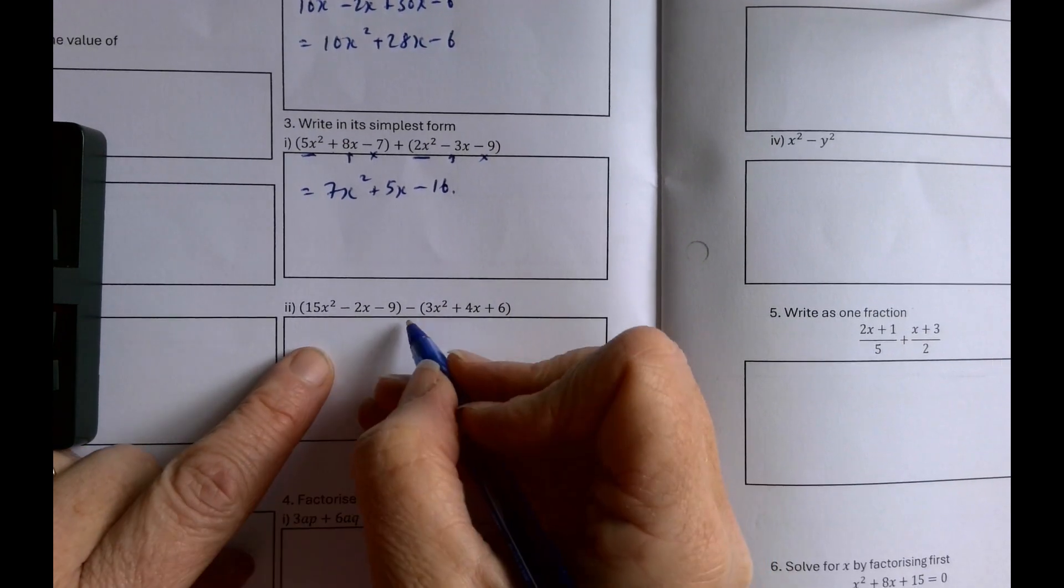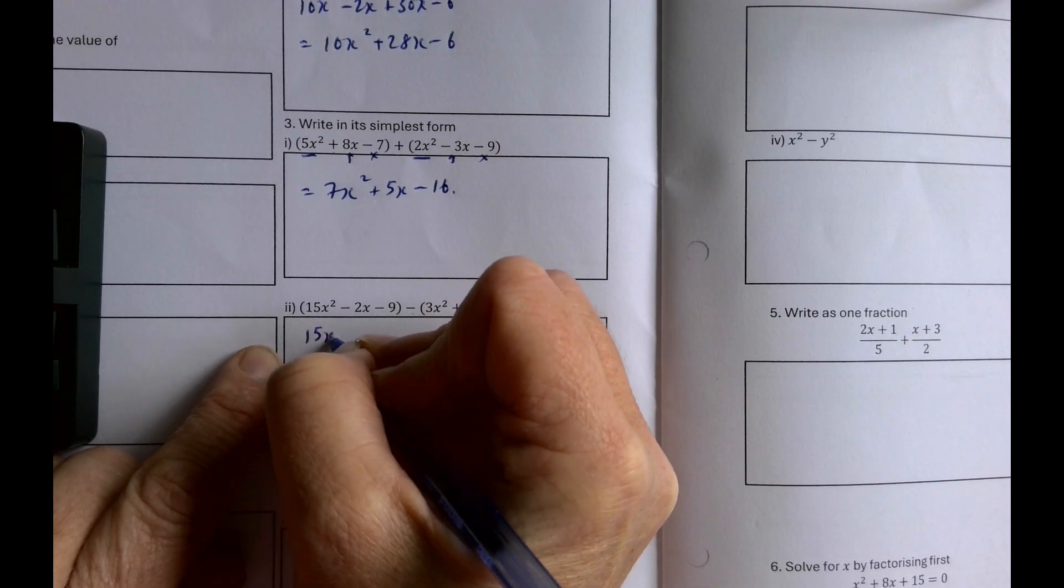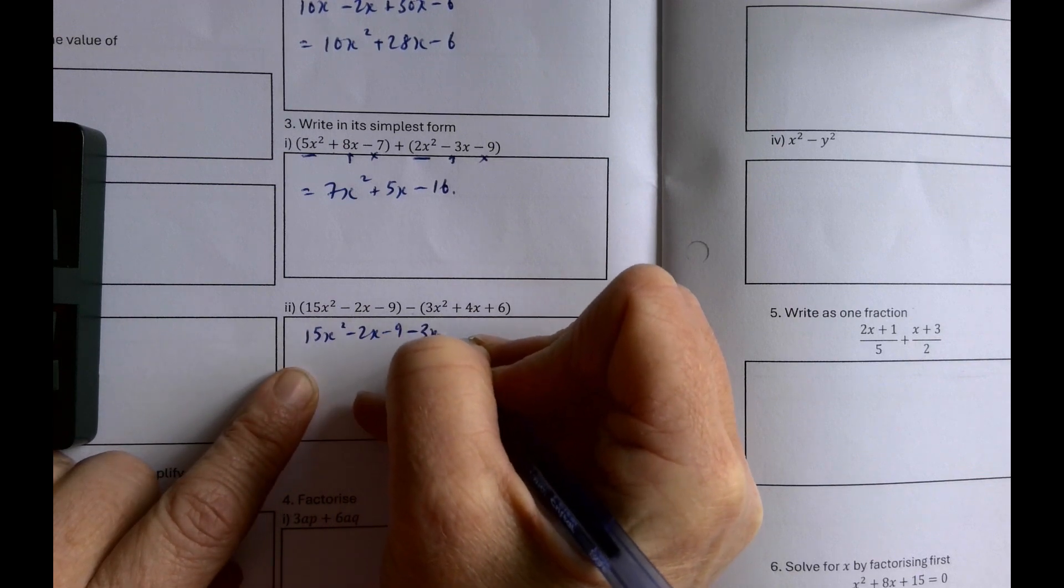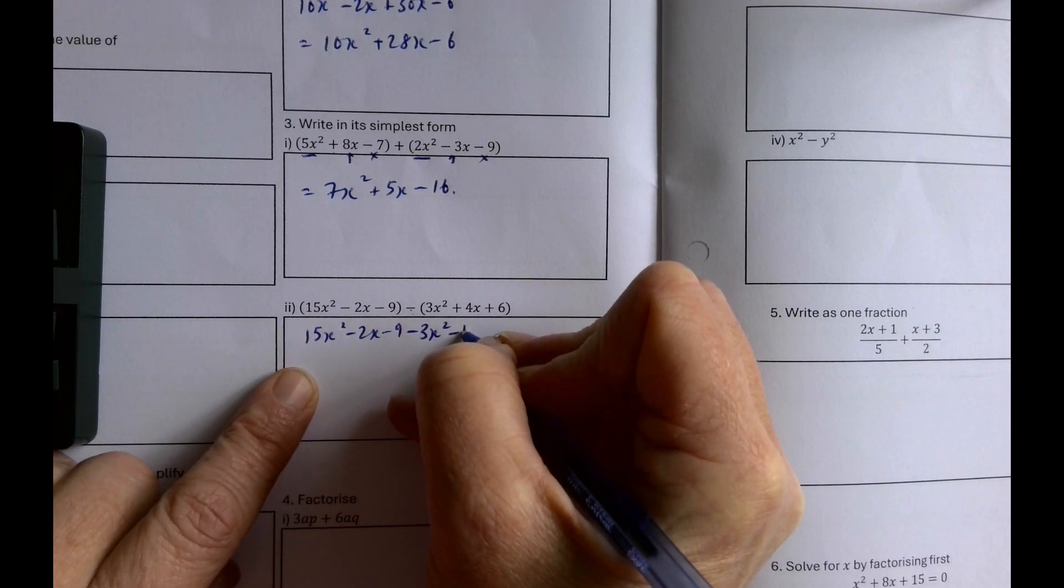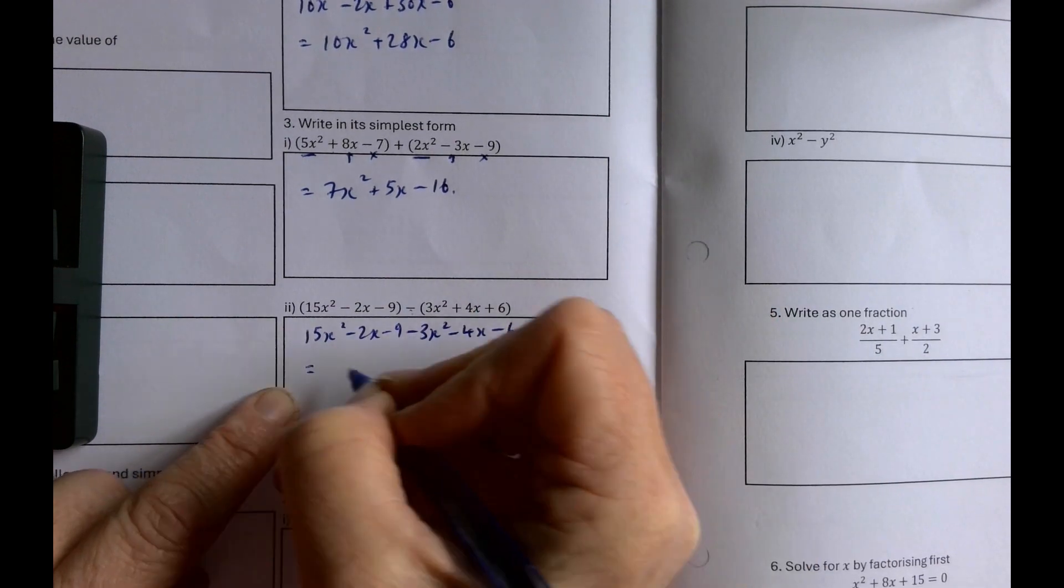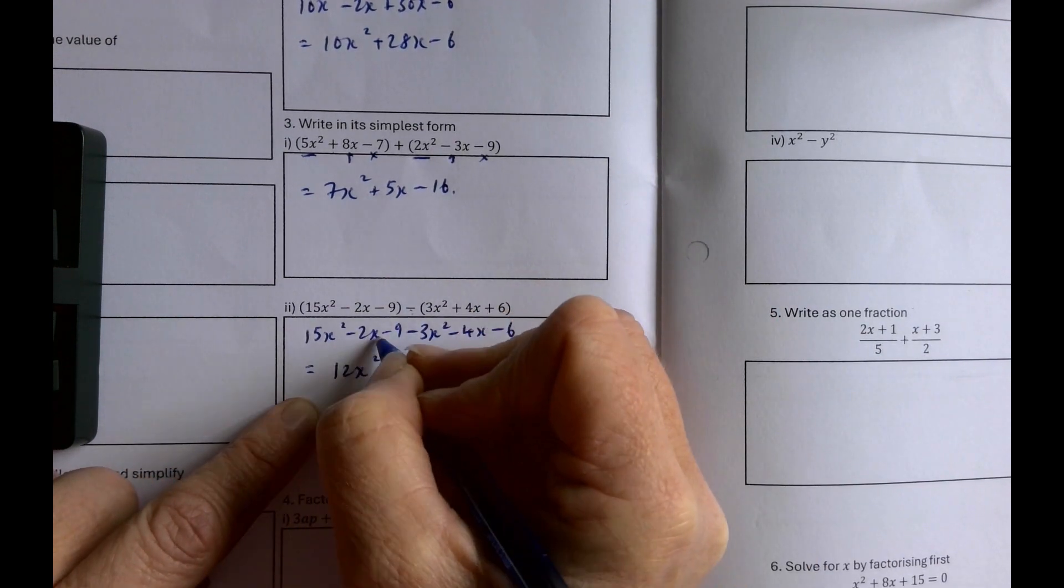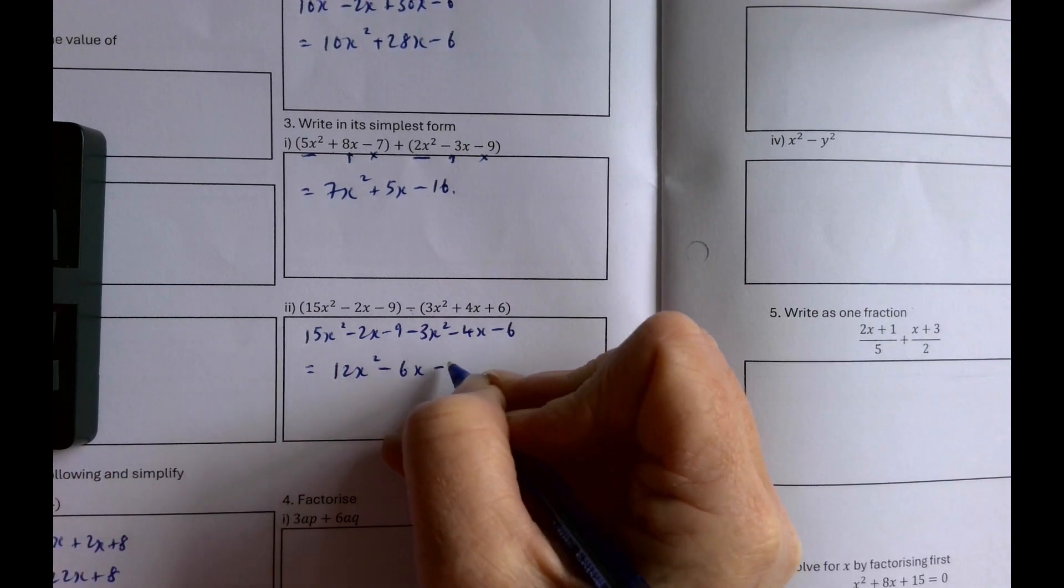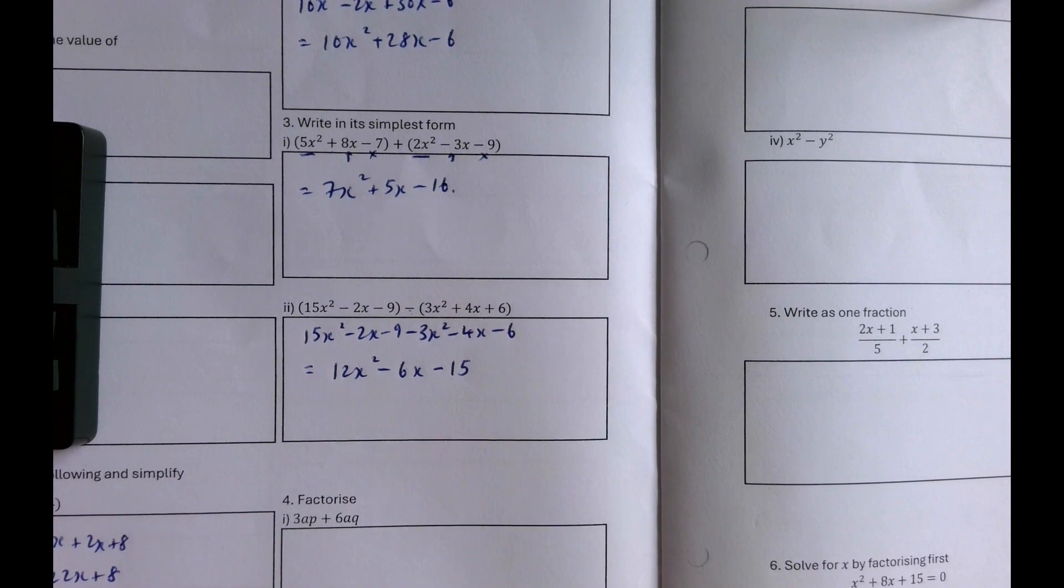But be careful on this one because there's a minus in between. So I'm going to rewrite it. 15x squared minus 2x minus 9, minus 3x squared minus 4x minus 6. And now I can put it together. 15x squared minus 3x squared is 12x squared, minus 2x minus 4x is minus 6x, and minus 9 and minus 6 is minus 15.